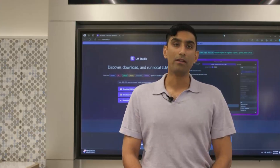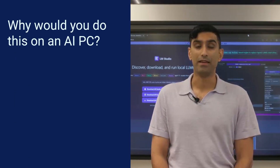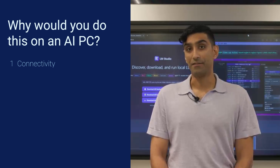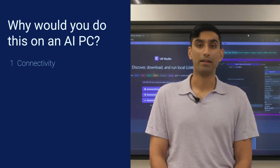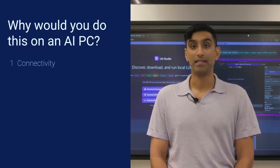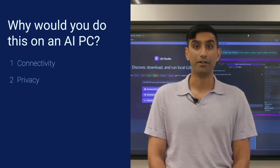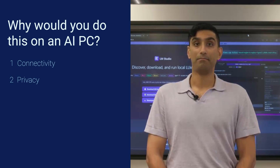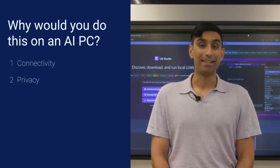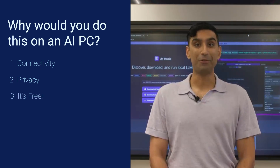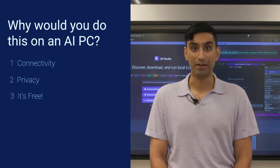One of the things I really want to drive home are the reasons why you do this on an AI PC. The first is connectivity — think about the last time you flew on an airplane and the Wi-Fi wasn't working correctly. This solves that problem. The second thing, even more important, is the privacy of your information. This is your company's data. This is your data. Keep it close, keep it local. And the third thing is that it's cheap — it's free. It's a very useful thing that you don't have to put your credit card down for.